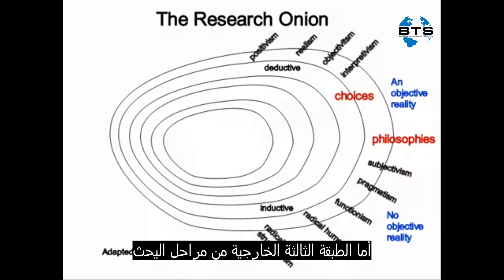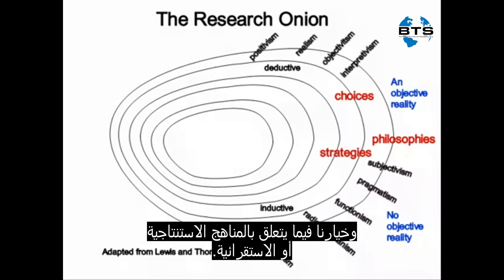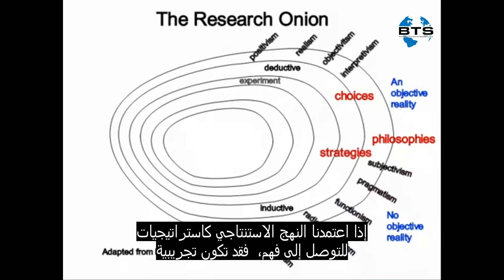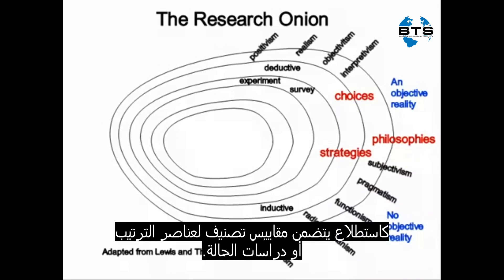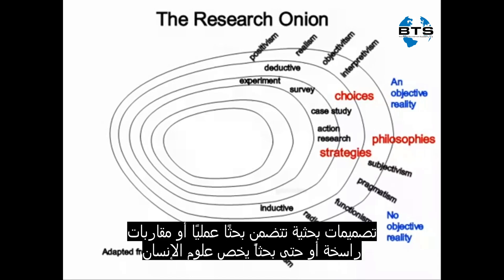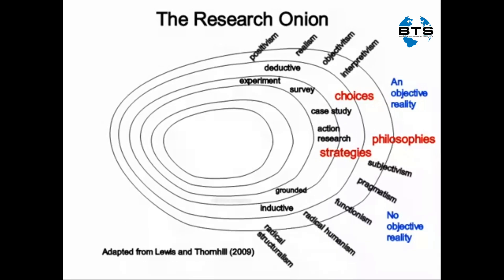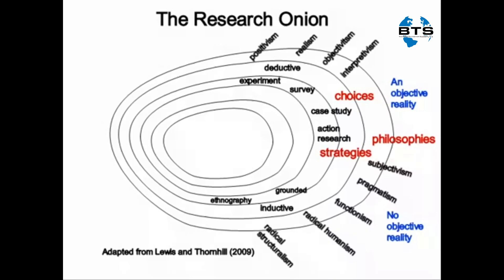The third layer from the outside of our research onion relates to the strategies we adopt given our philosophical position and our choice of deductive or inductive approaches. If we adopt a deductive approach, our strategies might be experimental, a survey involving rating scales or ranking items, or case studies. As we move to a more inductive approach, we're more likely to adopt research designs that involve action research, grounded approaches, or even ethnographic research where we observe and become part of the community that we wish to study.